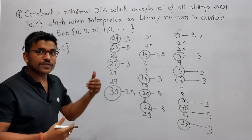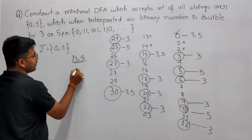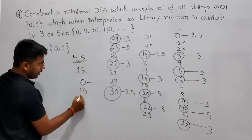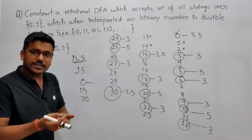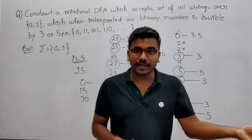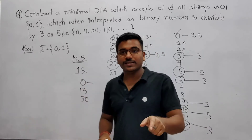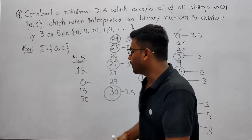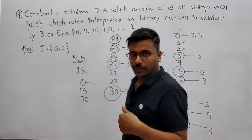So there are numbers divisible by only 3, numbers divisible by only 5, and numbers divisible by both 3 and 5. The numbers divisible by both are 0, 15, 30, 45, 60 — multiples of 15. To find this, take the LCM of 3 and 5, which gives 15. So we will construct a minimal DFA which is divisible by 15.